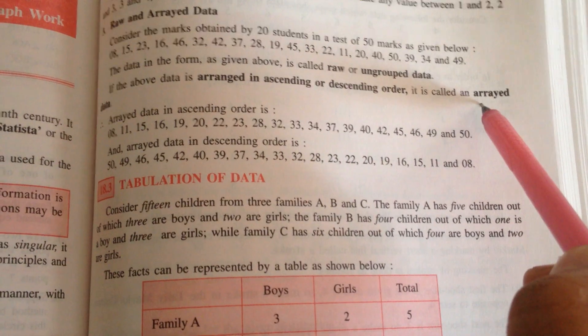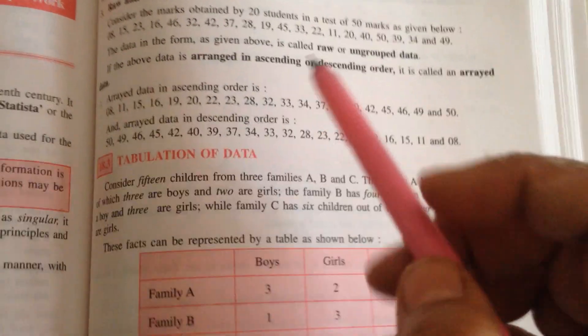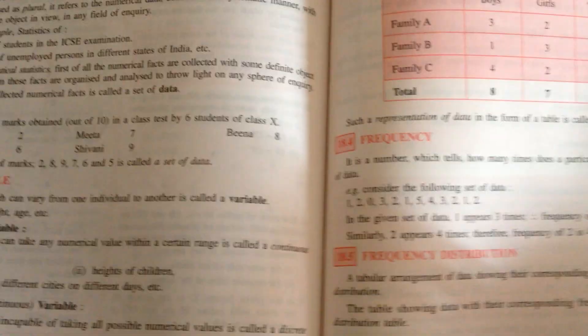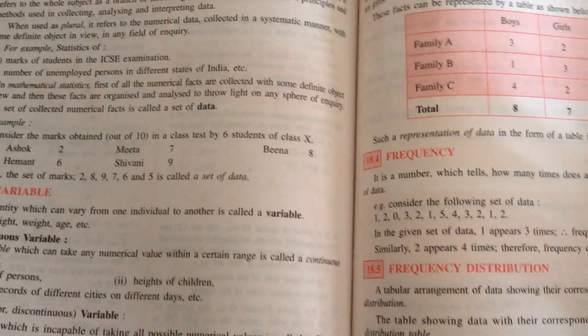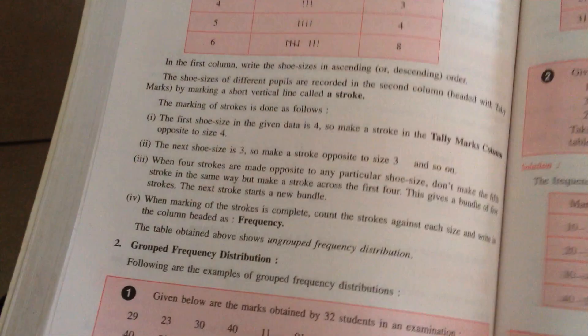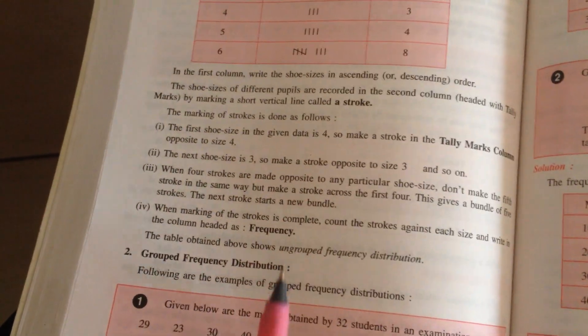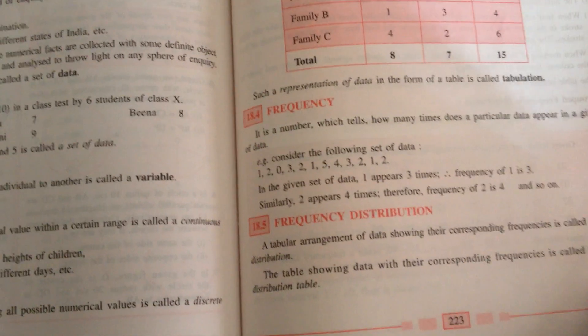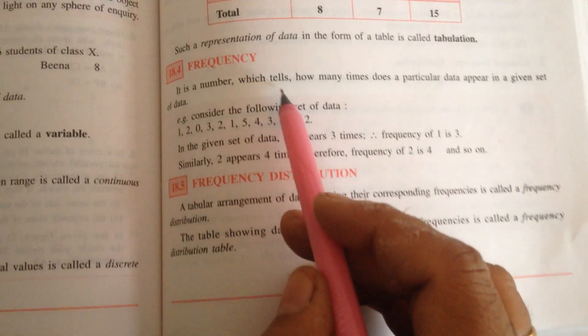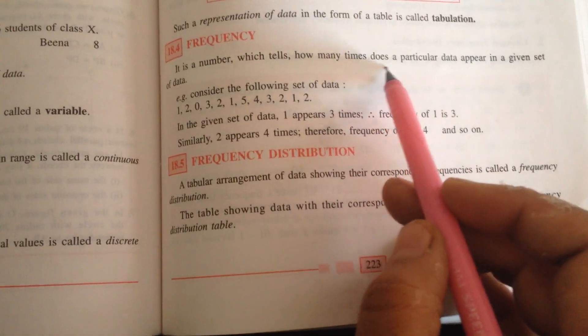When you properly arrange and write the data, that data is known as arrayed data. You can write in tabular form or in ascending order. Next one is ungrouped frequency distribution.